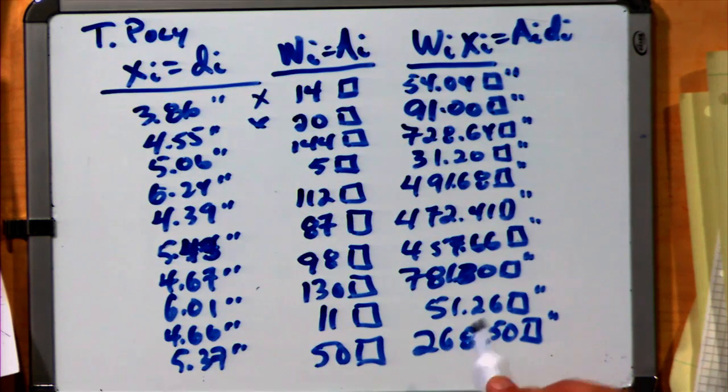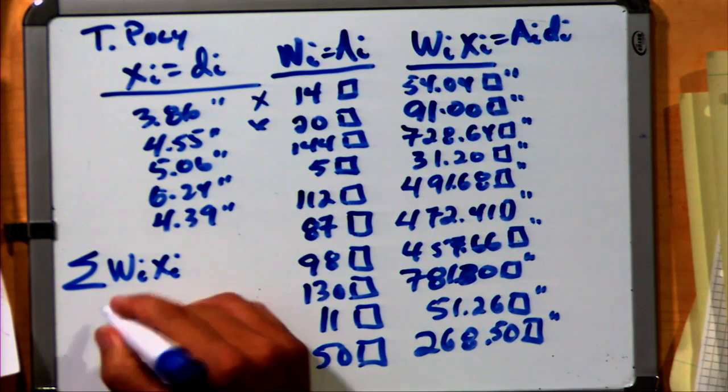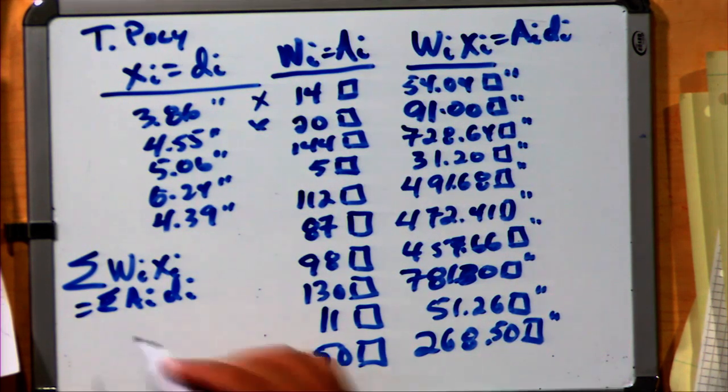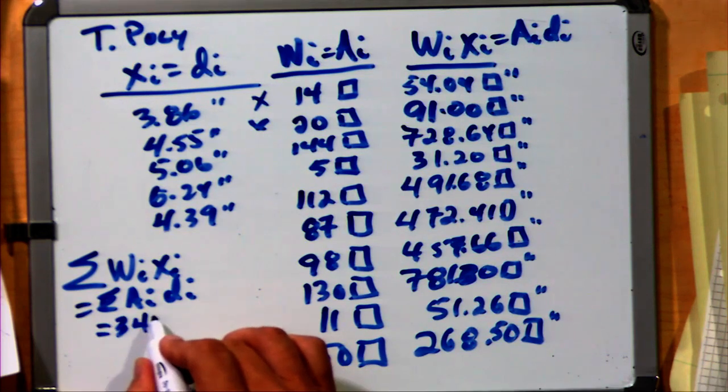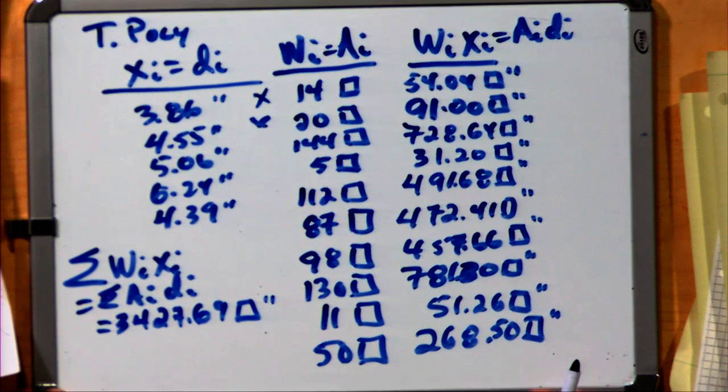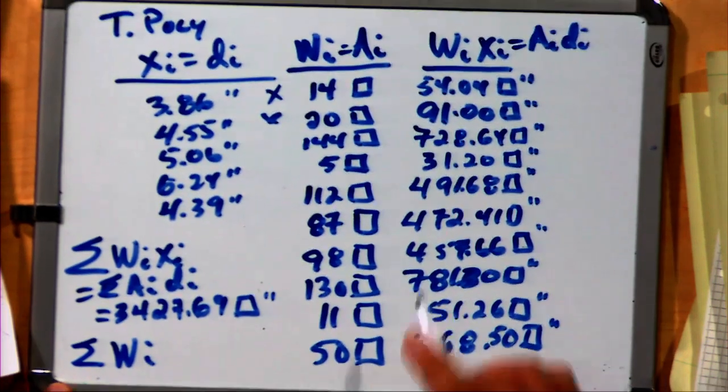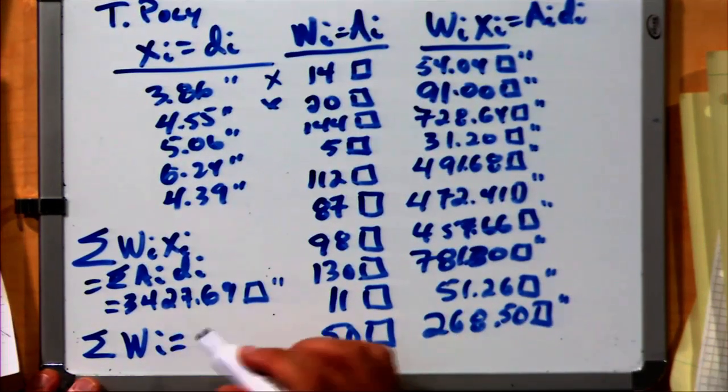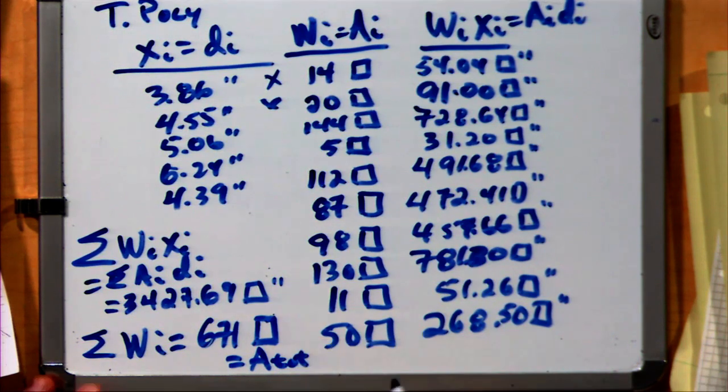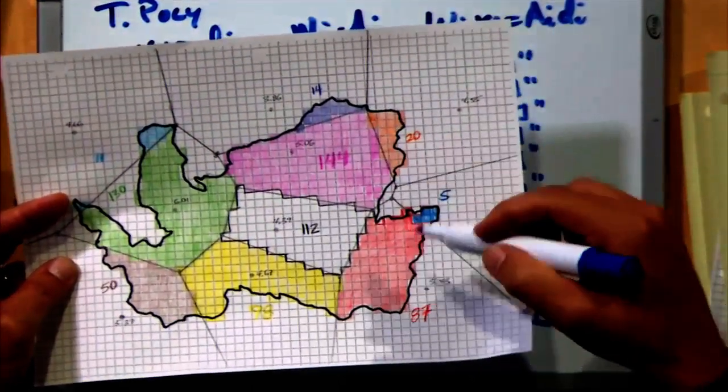Some values are substantially larger for two reasons: more depth associated with some, or a larger area. Now I'd like to take the sum of these products, the sum of the weights times the values, or the sum of the areas times the depths. When I take that sum, I get 3,427.69 box inches. If I also sum my total weight, the total area, I get 671 boxes. That's the total area of the watershed measured in grid boxes.